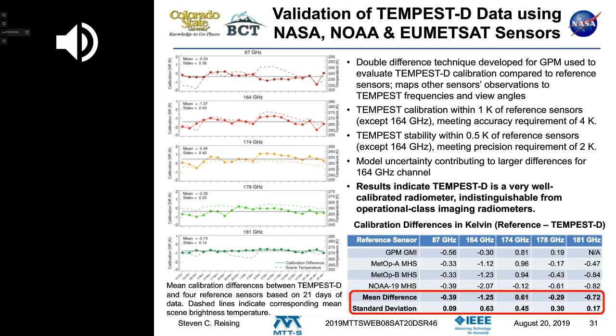We're comparing with the GPM Global Microwave Imager (GMI) and three Microwave Humidity Sounders (MHS) — two on European EUMETSAT satellites and one on NOAA-19. These are the standard references in the table.